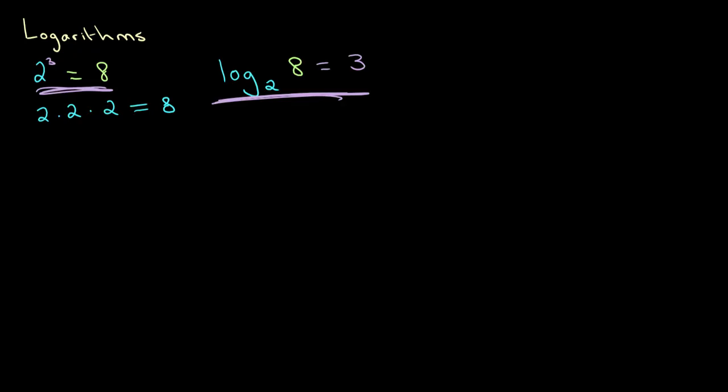As you probably already guessed, log is short for logarithm. So we read this equation as log base 2 of 8 is equal to 3. And what it's essentially saying is that 2 raised to the power of some number is equal to 8, and the other side of the equation tells us that that number is 3.